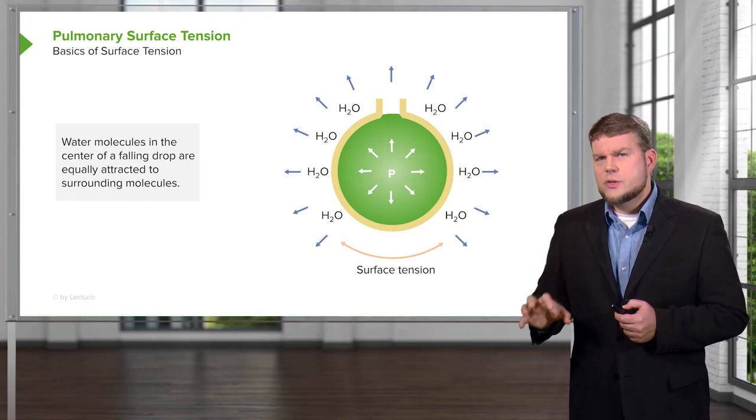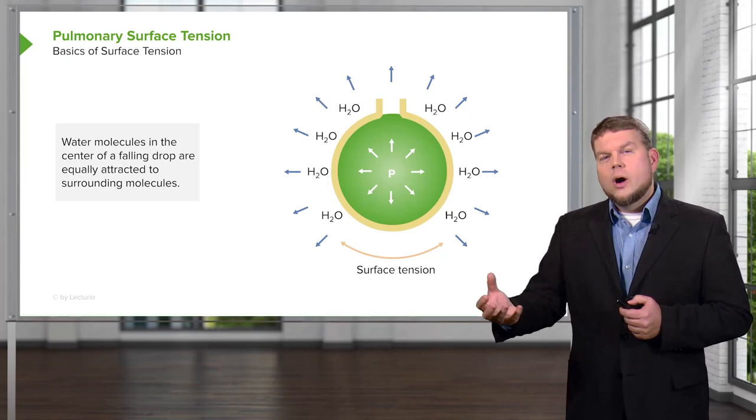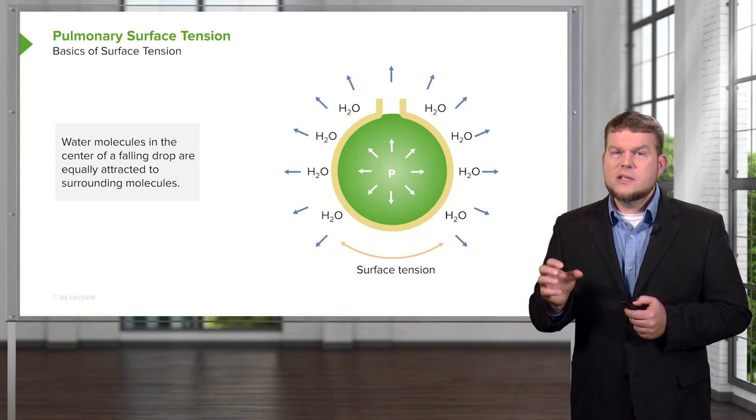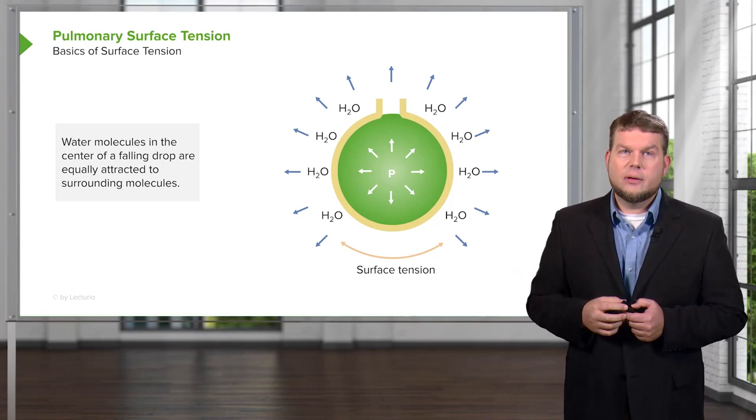Surface tension is an interesting physics principle in which water molecules in air will form a droplet. This occurs because water adheres to each other and forms surface tension around it.